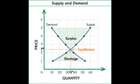Equilibrium is the best place to be — this is when there is exactly enough of an item for the people who are demanding it. A shortage is when there is not enough supply of an item for all the people who want it. During a shortage, the price of the item is raised to try to lower the demand.